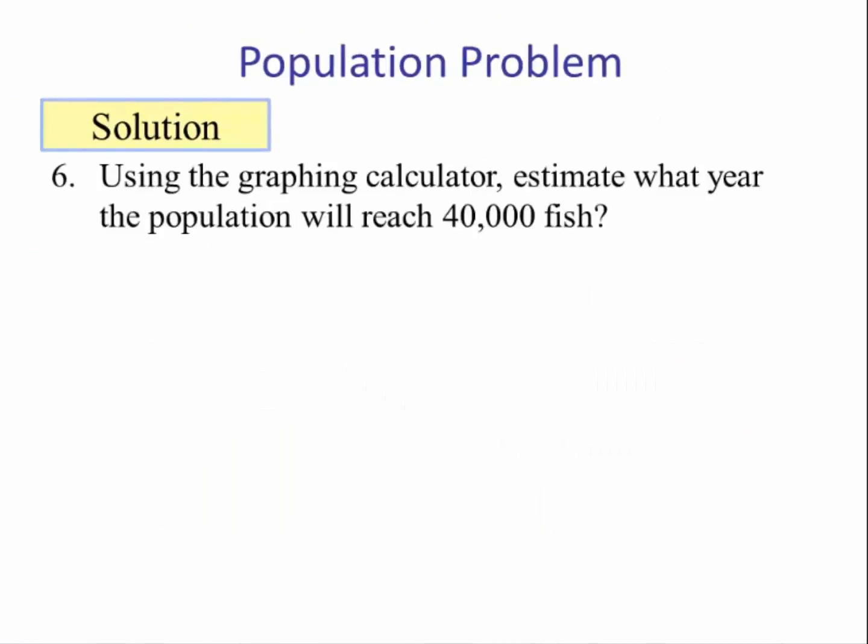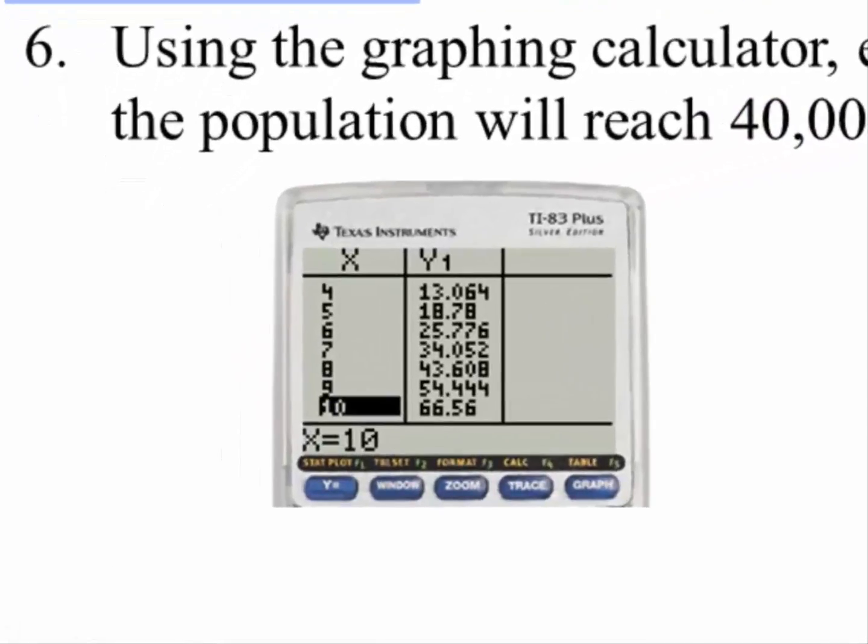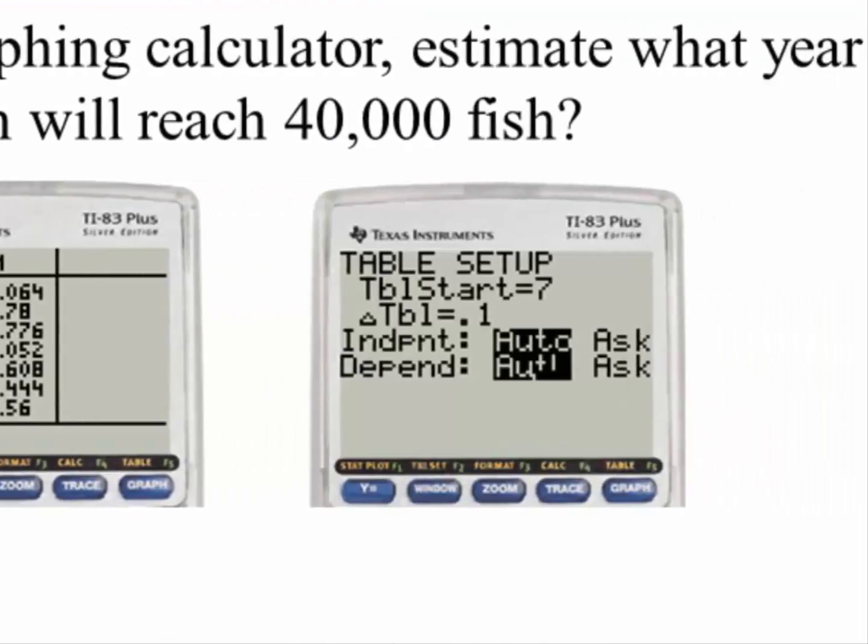And number six: using a graphing calculator, estimate what year the population will reach 40,000 fish. So now we are given a y value, an output, and we want to find what is the input that corresponds to the output. Since the units of fish are in the thousands, our output will be 40. So using the table, we can see that it's somewhere between year 7 and year 8. So if we hit second and window, which is table set, we can start the table at 7 and then count by 0.1.